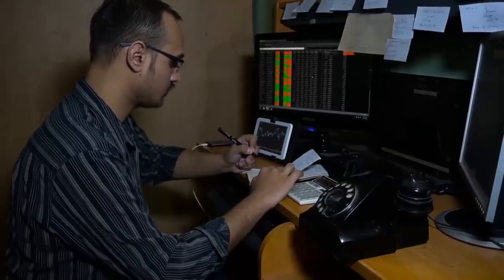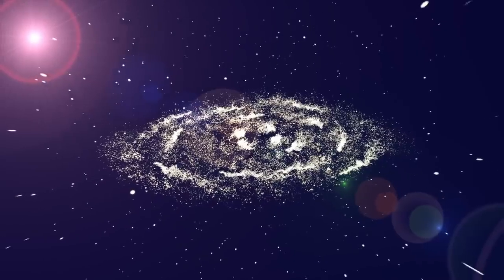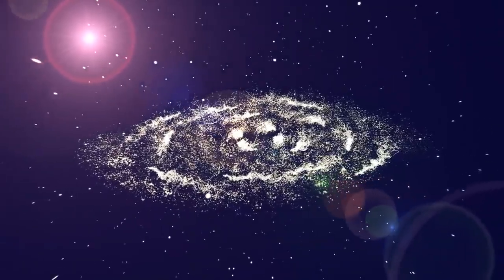One of Webb's central missions is to detect the first luminous entities, galaxies and stars that came into existence within the universe's first few hundred million years. These ancient structures are vital to understanding how the cosmos was born.